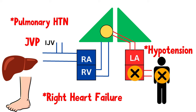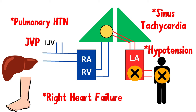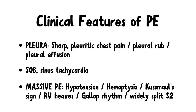When a pulmonary embolism occurs, gas exchange is impaired. The resulting hypoxemia prompts the heart to beat faster in an attempt to deliver more oxygenated blood to tissues, so these patients often have sinus tachycardia, which is a common ECG finding. To sum up, clinical features of pulmonary embolism include sharp pleuritic chest pain, pleural rub, pleural effusion, shortness of breath, and sinus tachycardia. If it's a massive embolism, it can cause hypotension, hemoptysis, Kussmaul's sign, right ventricular heaves due to pulmonary hypertension, and gallop rhythm due to heart failure. A widely split S2 may also be heard on auscultation due to delayed closure of the pulmonary valve caused by increased resistance in the pulmonary arteries and the impact of right ventricular strain.